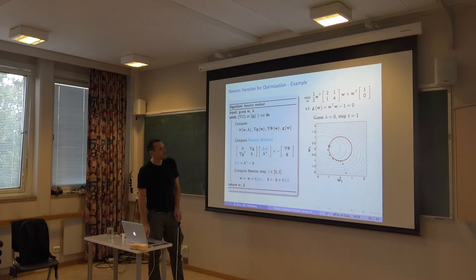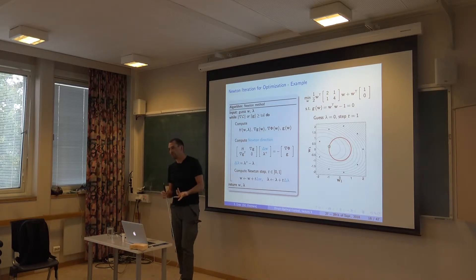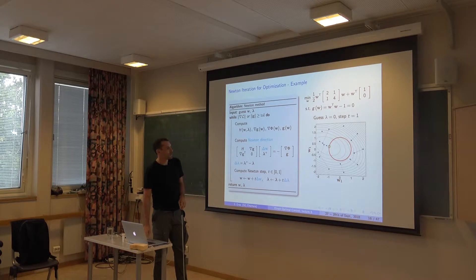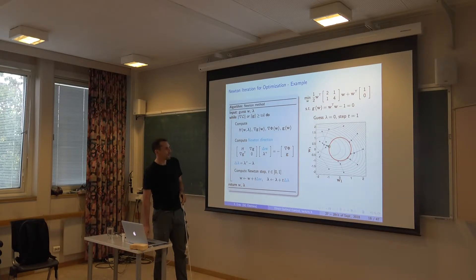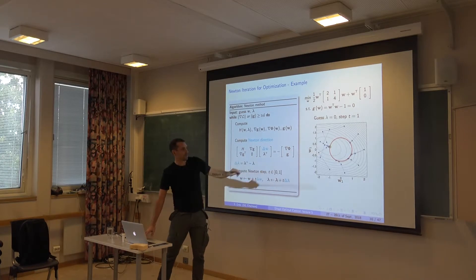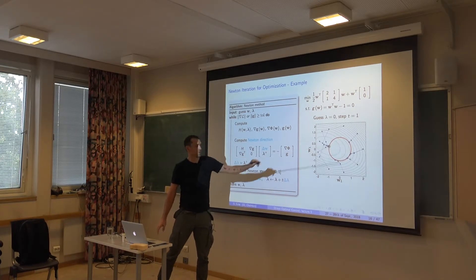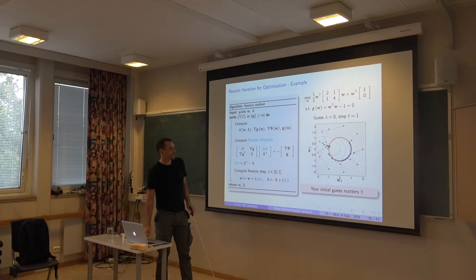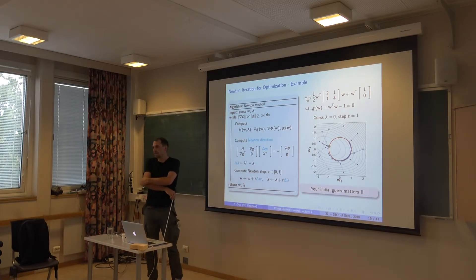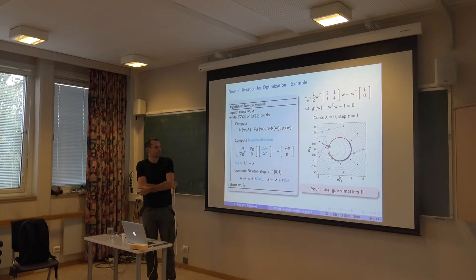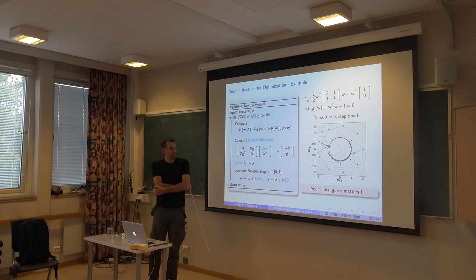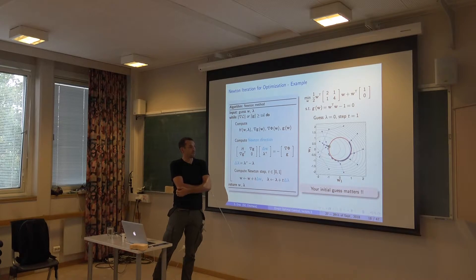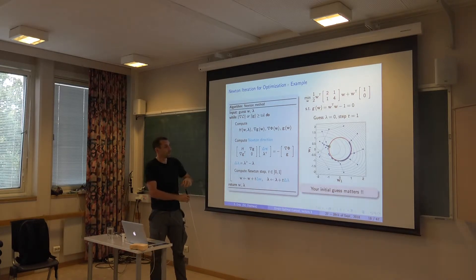We can try starting at different places, and the outcome will be very different depending on where you start. Here's a bunch of initial guesses showing the first, second, and third Newton steps. Some have more or less reached the optimum already, while others are completely lost. One guide has to go around the full circle, so it will take a while. With very wrong guesses it may take a long time. You can easily build even simple problems where it will just not converge at all.